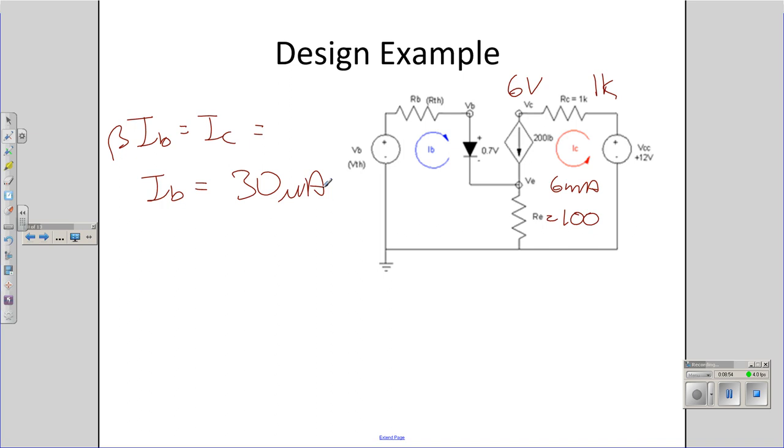To stabilize the Q point, I want 1 plus beta RE be greater than RB, meaning that RB is much, much less than 20 kilo-ohms. Okay, beta is 200, RE is 100 ohms. 1 plus beta RE is 20 kilo-ohms. So let RB be 2 kilo-ohms.